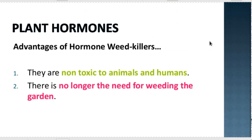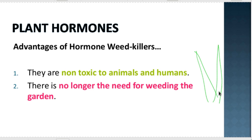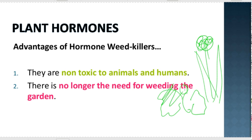What's nice about using auxin as a weed killer is it actually has no effect on humans or animals. Another advantage is that I don't have to go and pick out specific weeds. If I'm growing something with very thin leaves in an area and something with very broad leaves is growing in it, the auxin is going to kill the broad-leaved plant but keep the thin-leaved plant.